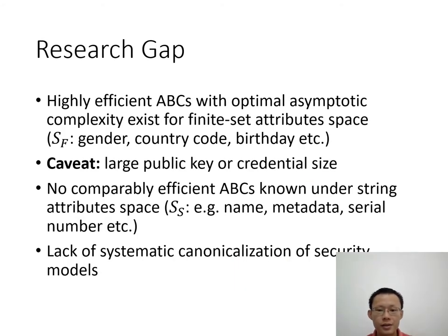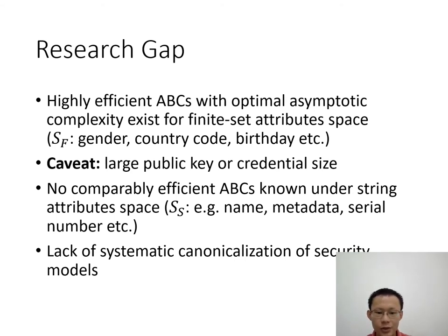There are highly efficient ABCs with optimal asymptotic complexity for finite set attribute space — meaning the attribute space with finitely many values, such as gender (only male and female), country code, birthday, and so on. Such ABCs can achieve high efficiency because they perform pre-computation on the finitely many attributes, but these ABCs either have a large public key or large credential size. We do not find comparably efficient ABCs under the string attribute space — the attribute space that does not have finitely many values, such as name, metadata, serial number, and so on. We also notice that there is a lack of systematic security analysis for ABC systems, which we will discuss further in later slides.